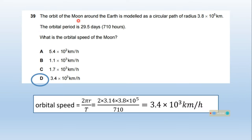The orbit of the moon around the earth is modeled as a circular path. The orbital period is 29.5 days. What is the orbital speed of the moon? Orbital speed is the total distance, 2 pi r, divided by the time period T. Put in the values and the orbital speed is 3.4 times 10 to the power 3 kilometers per hour.